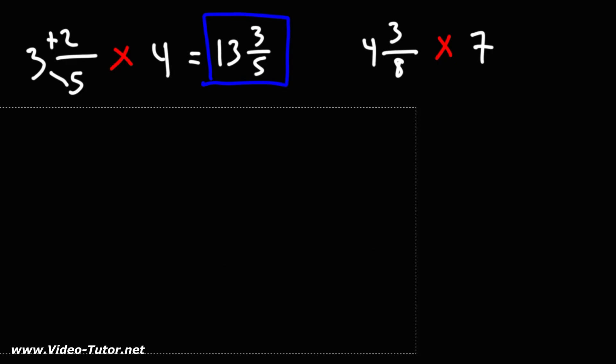Another way in which you could see it is this: when you times something by 4, it's like adding it 4 times. So imagine if you have 3 and 2 fifths, if you add it 4 times, what would you get?